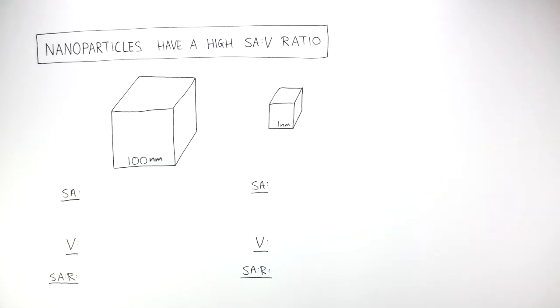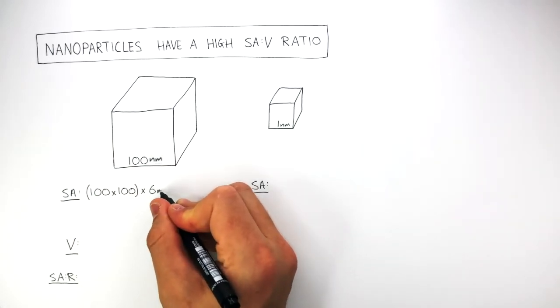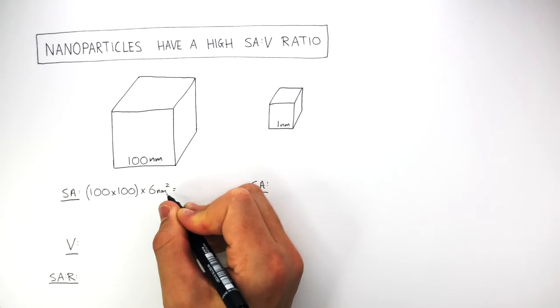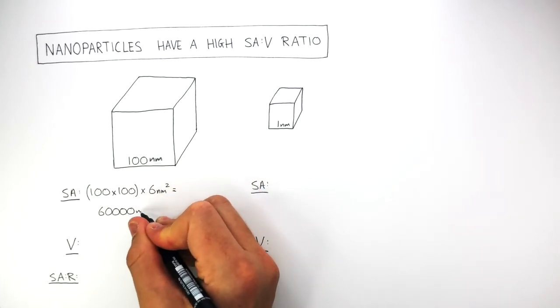To calculate the surface area of the large cube, we do 100 times 100 times 6 square nanometers. This equals 60,000 square nanometers.